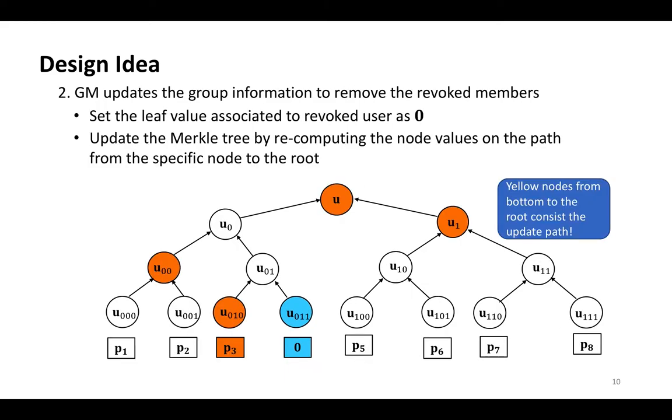This is the group update operation. When a user wants to leave the group, the group manager sets the leaf value associated to that user as zero. Then, it updates the Merkle tree by recomputing the node values on the path from the specific node to the root. This process can be simply shown in the following figure. When a user with index 011 wants to leave the group, the group manager sets its leaf value as zero. Then, it updates the tree along the path consisting of yellow nodes from the bottom to the root.